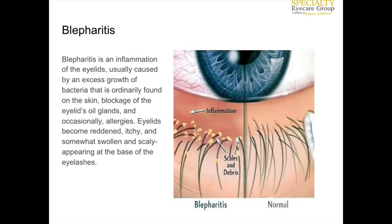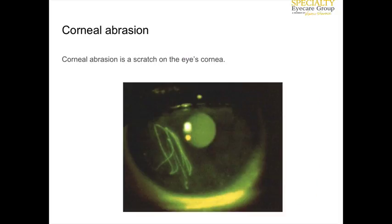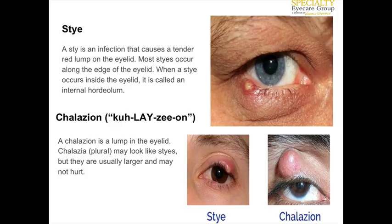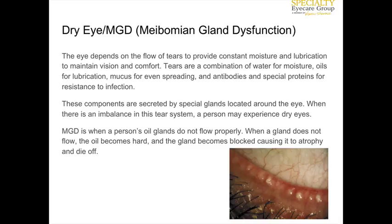Some common conditions: blepharitis is inflammation of the eyelids that can cause excessive bacteria to grow on the eyelid surface. A corneal abrasion is a scratch on the cornea — if we put dye in, we can sometimes see the pattern of the abrasion. A stye is an infection that causes a tender bump; if it persists, it can become a hard, painless chalazion. Dry eye and MGD are conditions where various components of the tear film are deficient — we'll cover these in more detail in other videos.